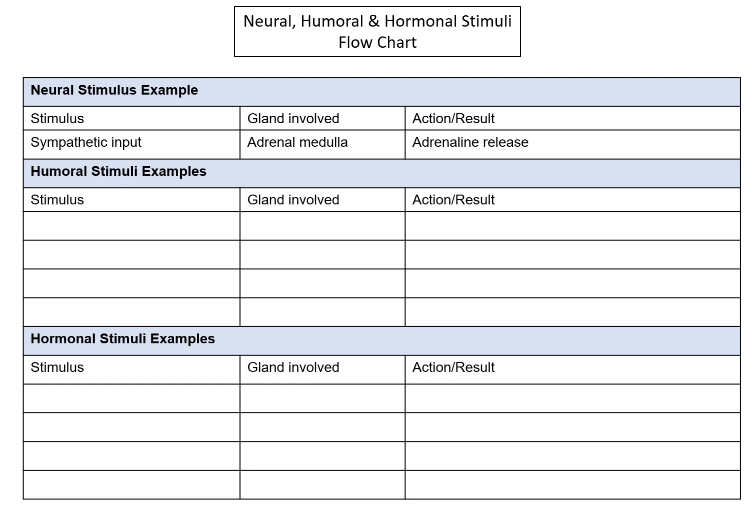Here's an example of neural stimuli already on this slide. Your sympathetic input stimulates the adrenal medulla — not the adrenal cortex, but the medulla — to release adrenaline or epinephrine. The stimulus is the sympathetic input, the fight-or-flight response; the gland involved is the adrenal medulla, and it releases adrenaline. You can get detailed about what adrenaline does: it dilates the pupils, increases heart rate, increases breathing rate, and diverts blood out to the muscles.